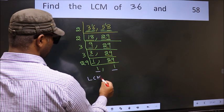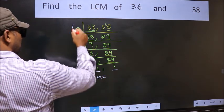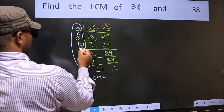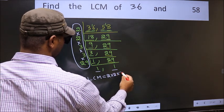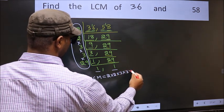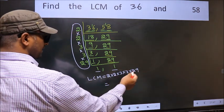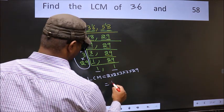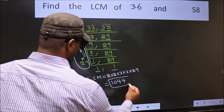So our LCM is, LCM is the product of these numbers. That is 2 into 2, into 3, into 3, into 29. When we multiply these numbers, we get 1,044 is our LCM.